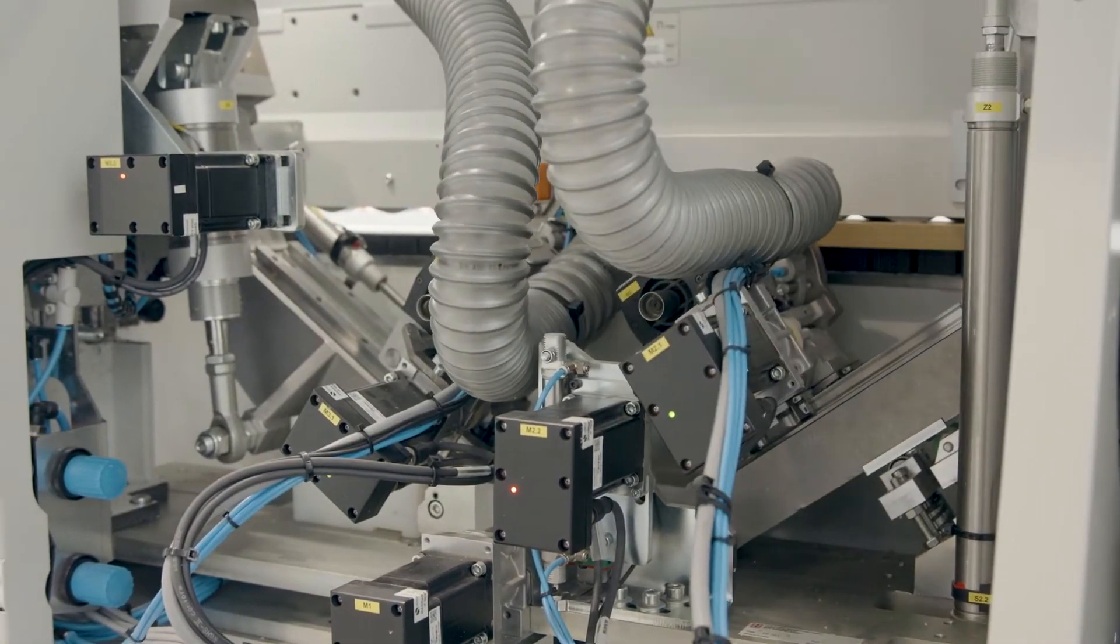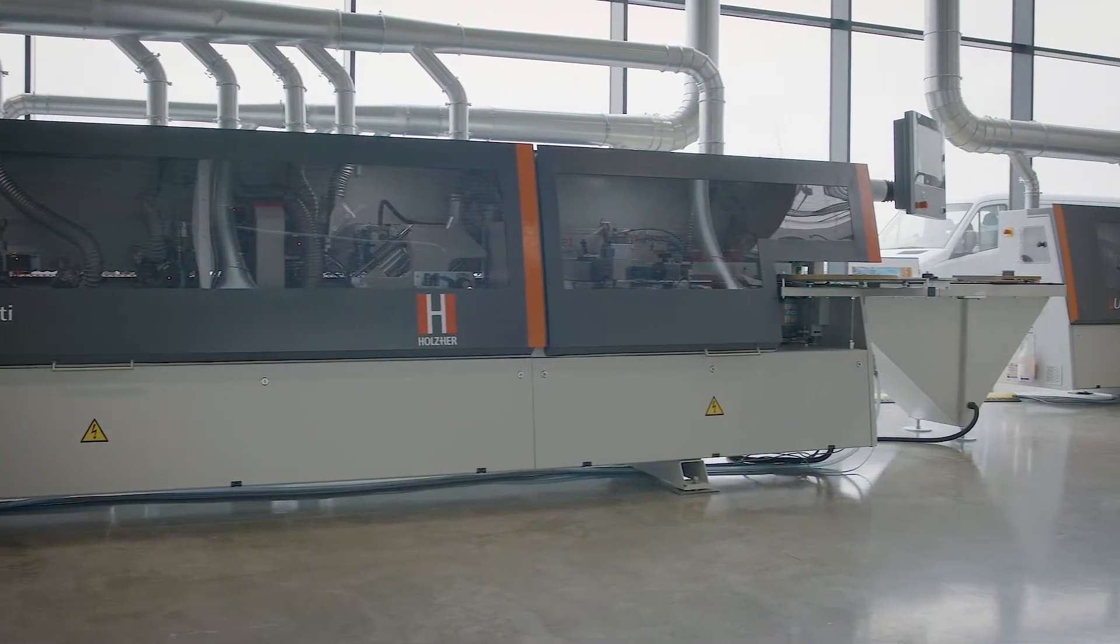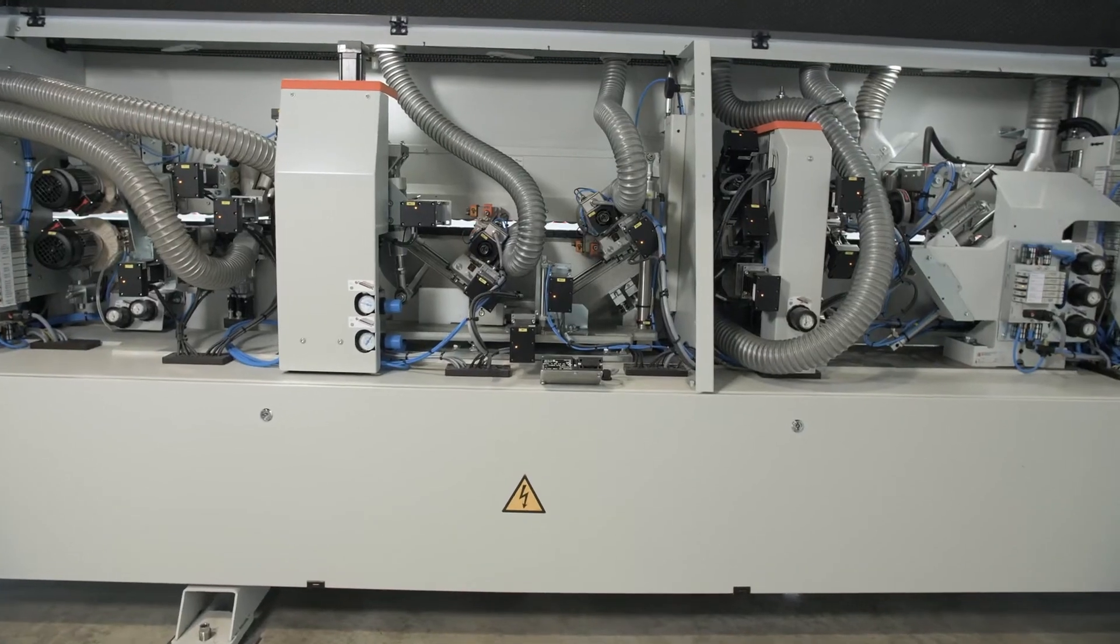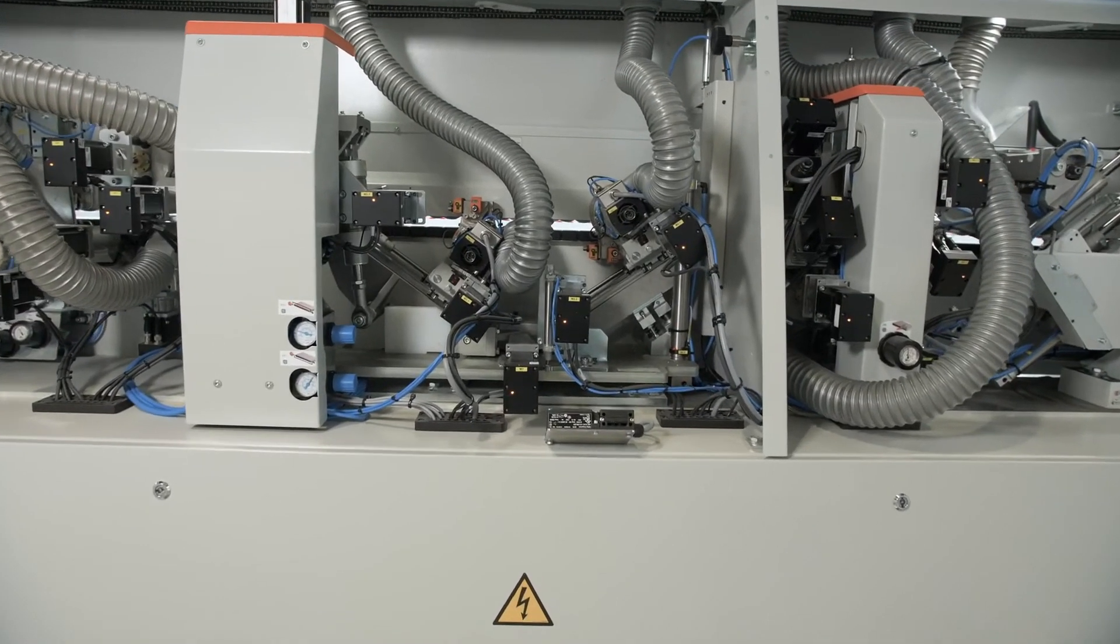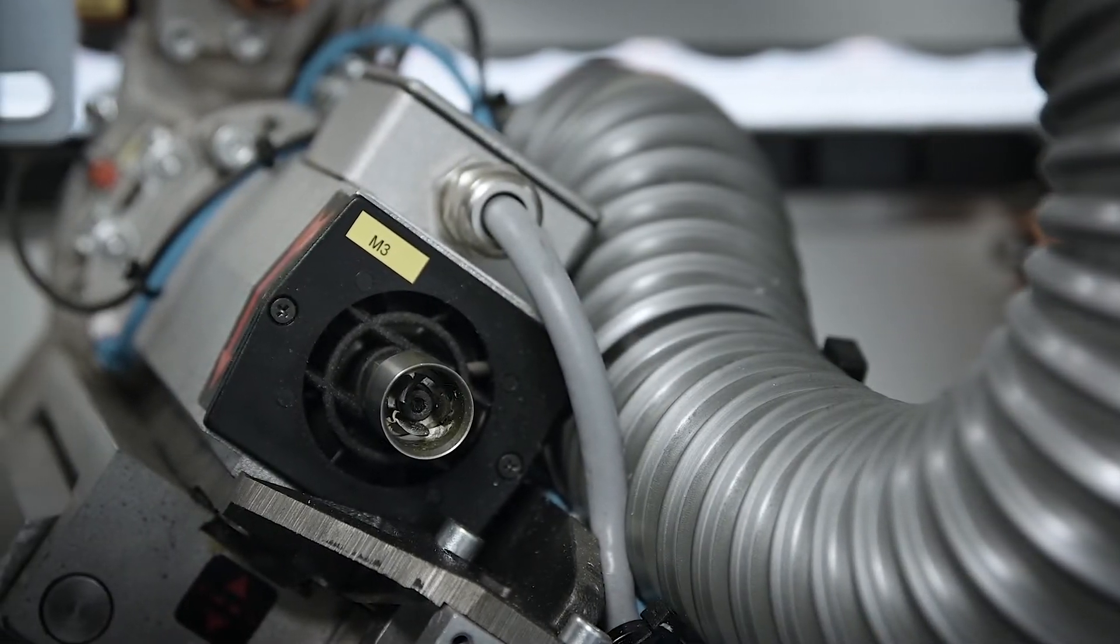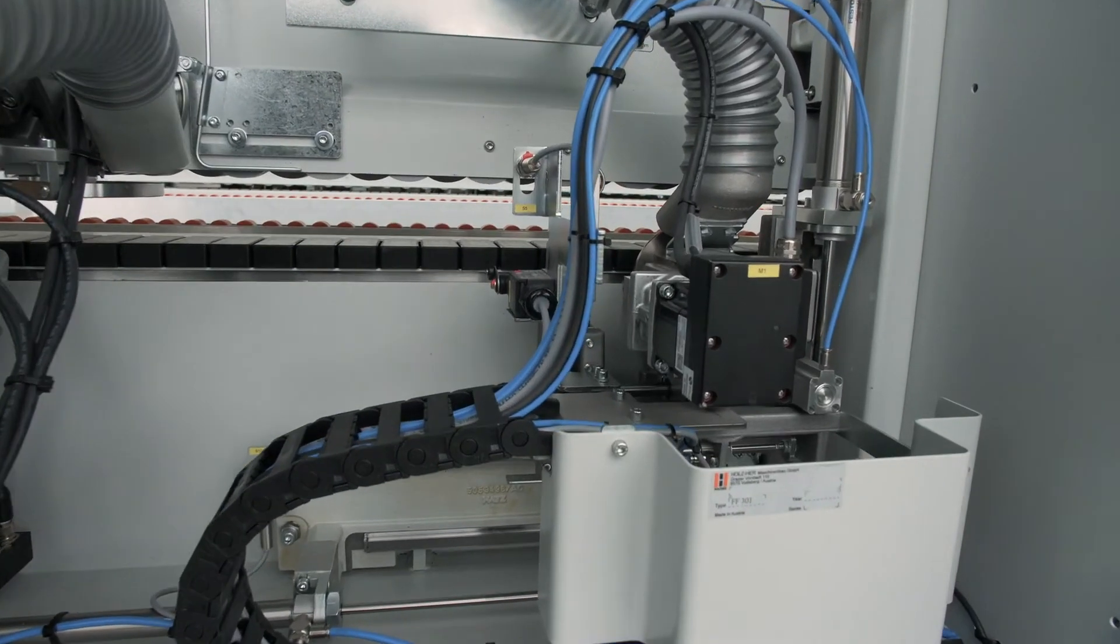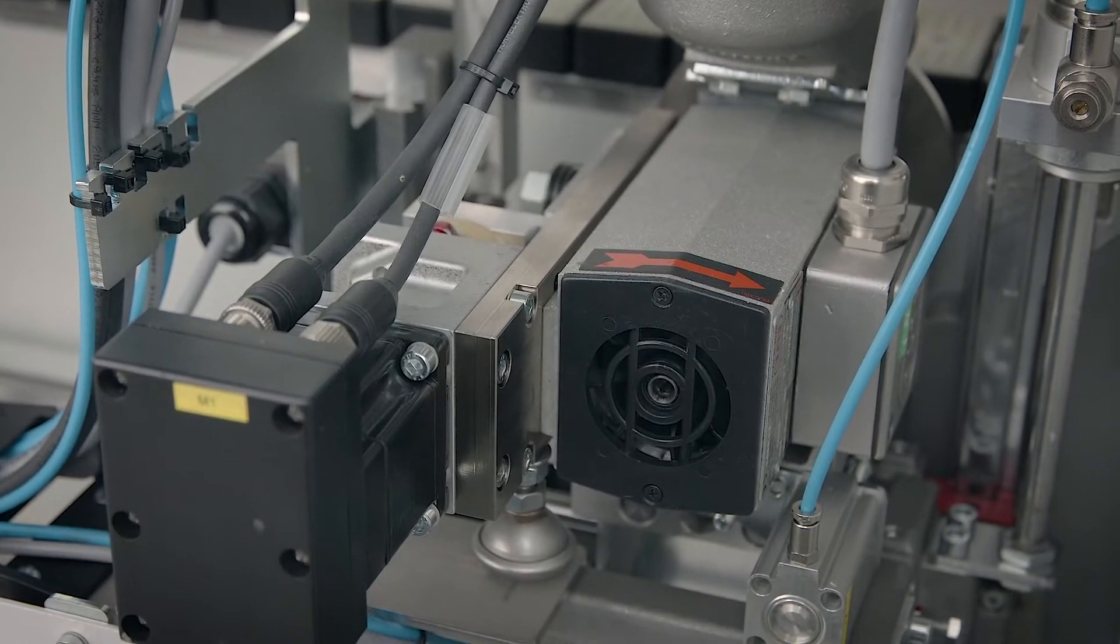The Sprint 1327 and 1329 differ mainly in machine length. The Sprint 1329 uses a twin motor corner copying unit. The Sprint 1327 is equipped with a single motor corner copying unit and is therefore more compact and 400 millimeters shorter.